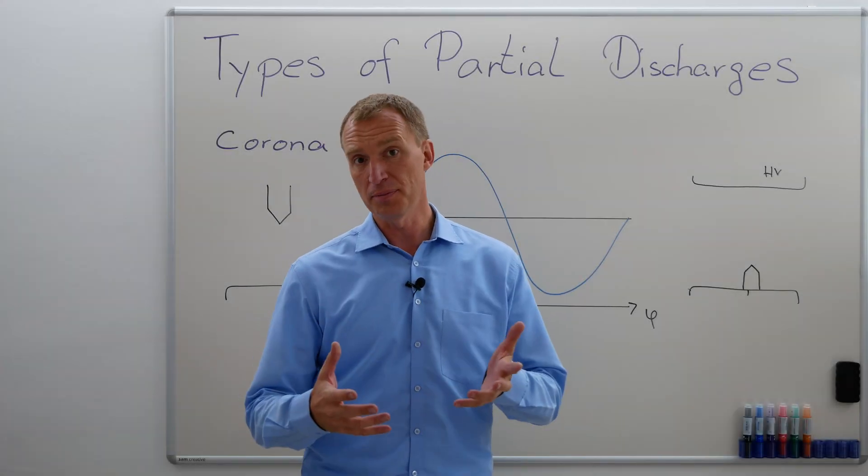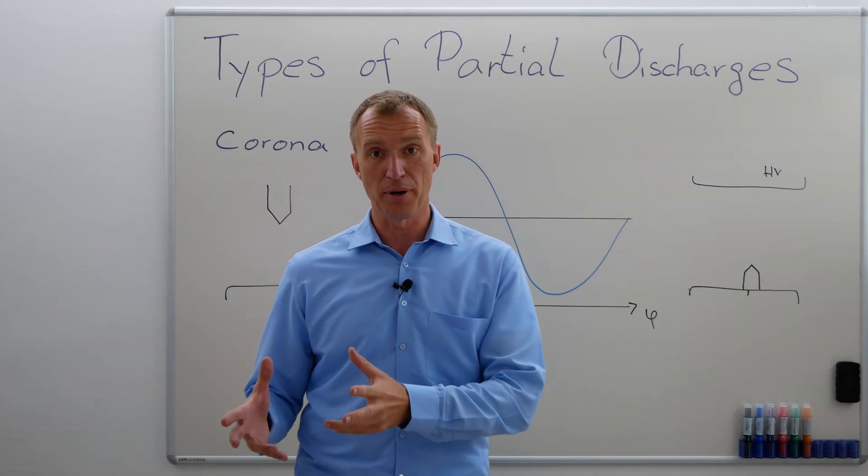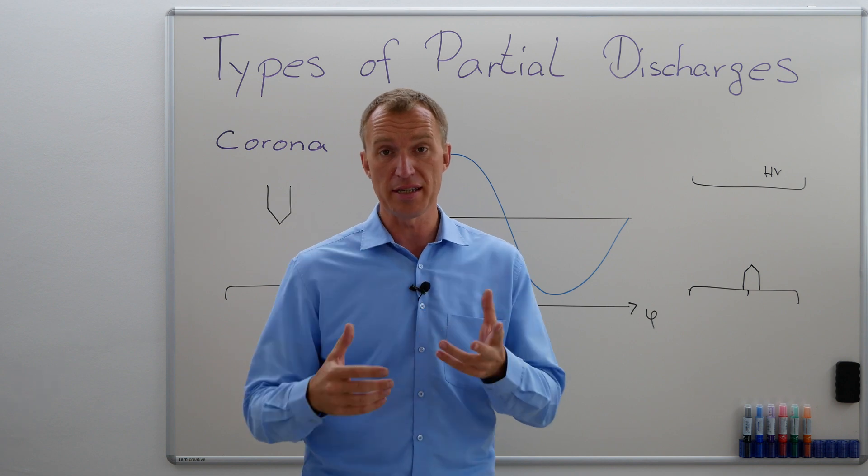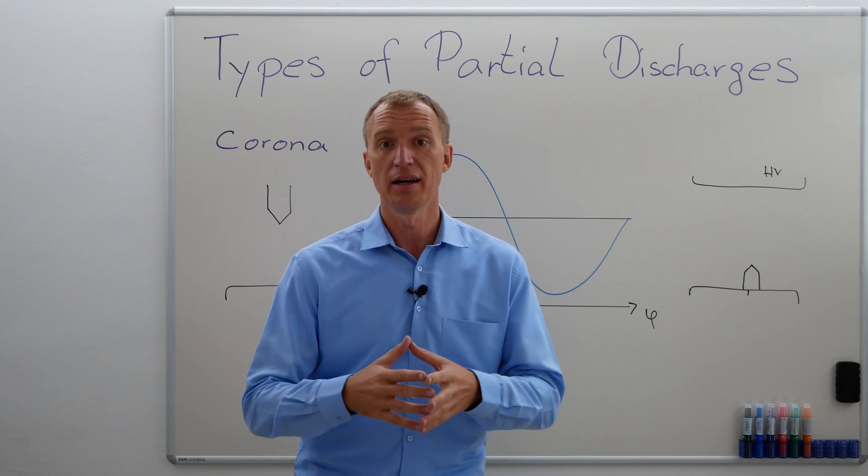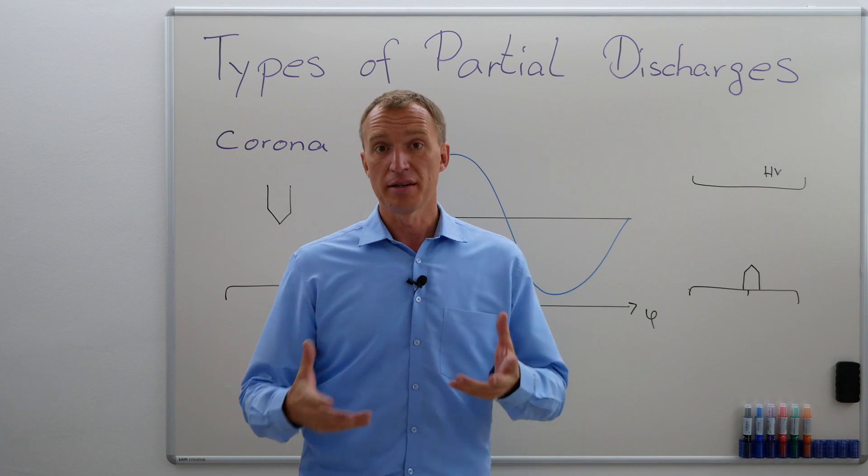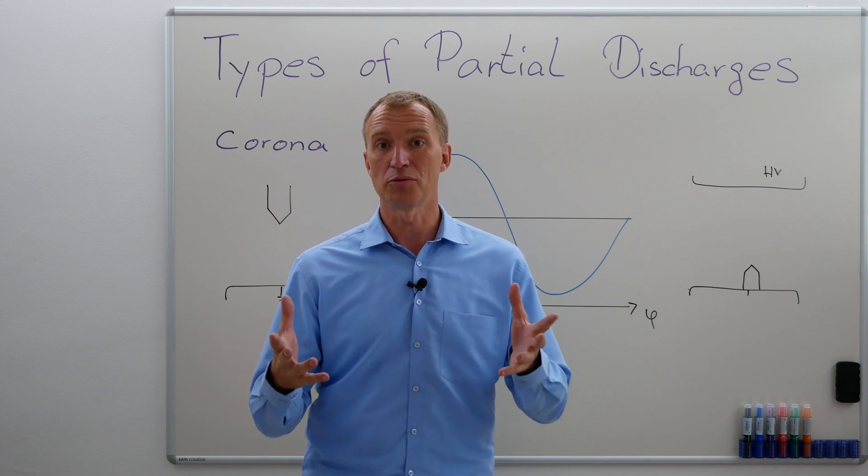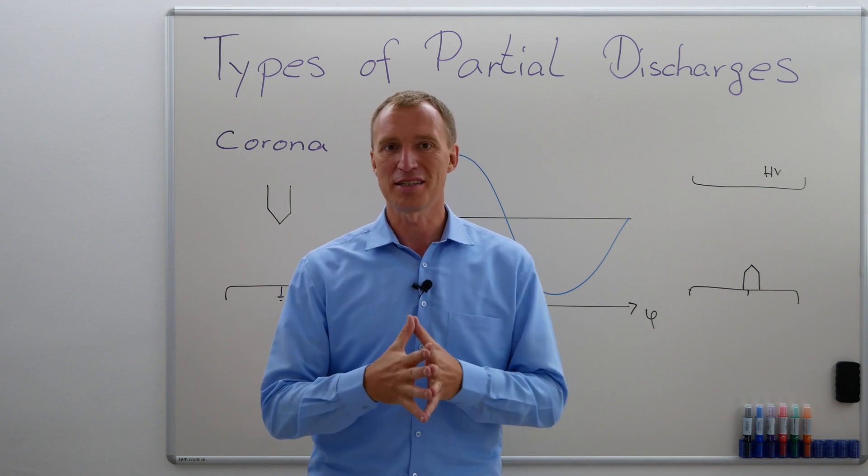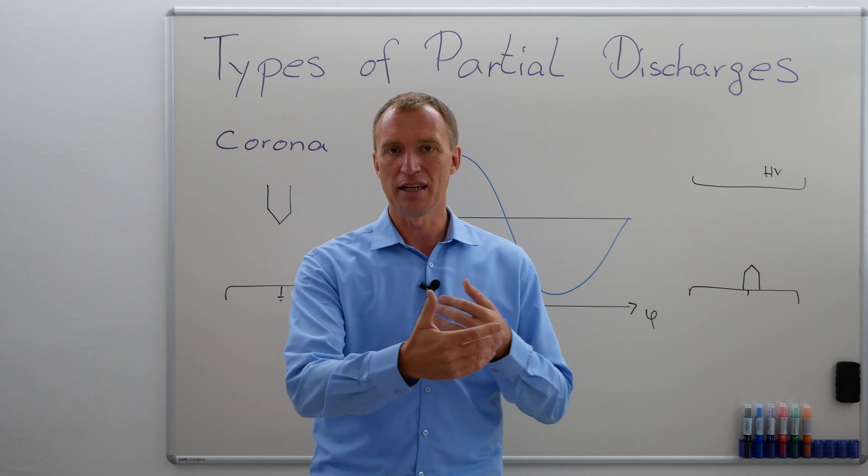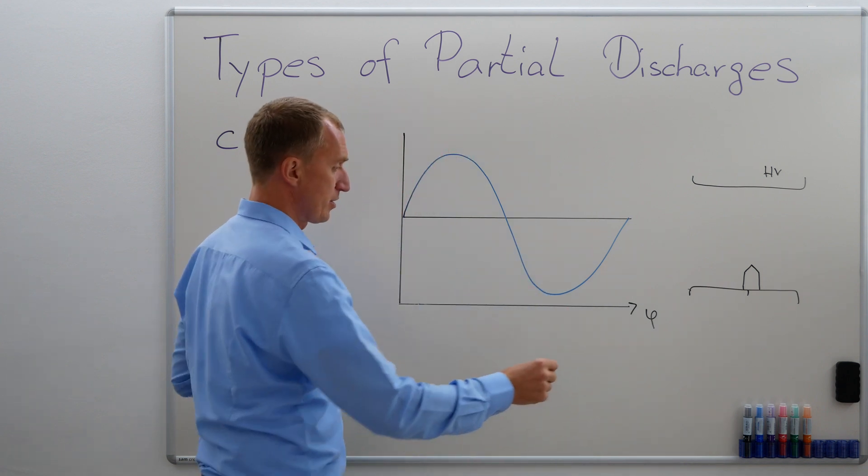What are corona discharges? Well, corona discharges is an external partial discharge. That is the reason sometimes it's easy to see or sometimes easy to detect. And if you want to measure them, they have a couple of characteristics that are really advantageous for us because they're easy to understand or to see when we have a corona or not. So let's talk about this.